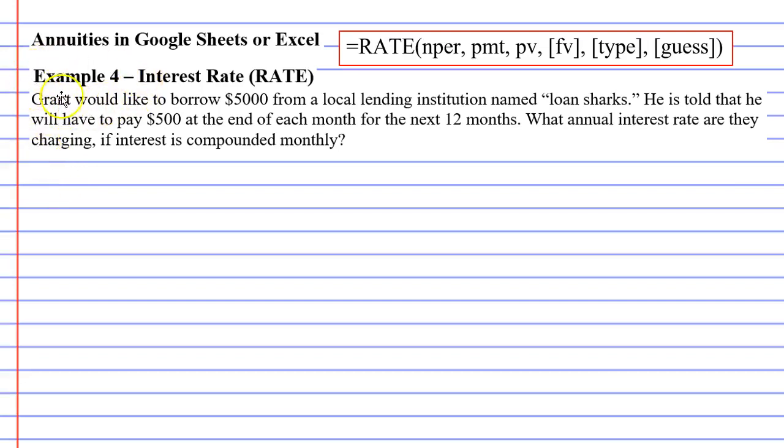In this video we are going to complete the example. I'm going to show you how to use Google Sheets or Microsoft Excel to calculate an interest rate. Grant would like to borrow $5,000 from a local lending institution named Loan Sharks. He is told that he will have to pay $500 at the end of each month for the next 12 months. What annual interest rate are they charging if interest is compounded monthly?